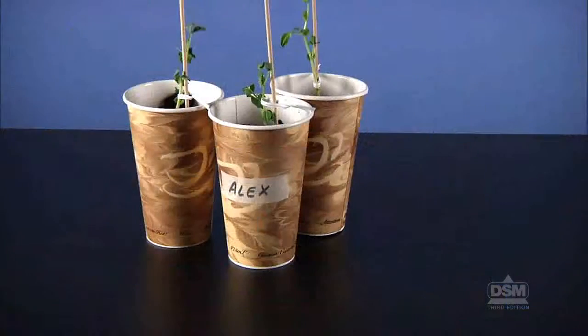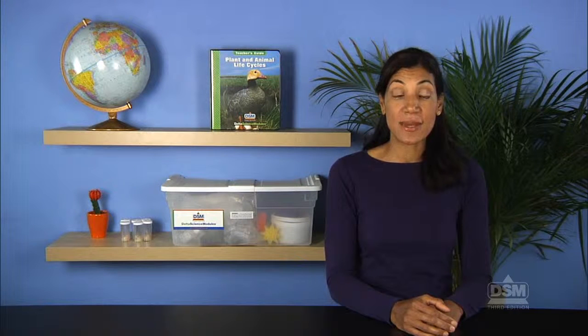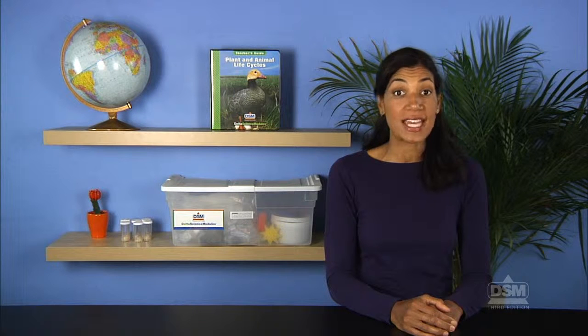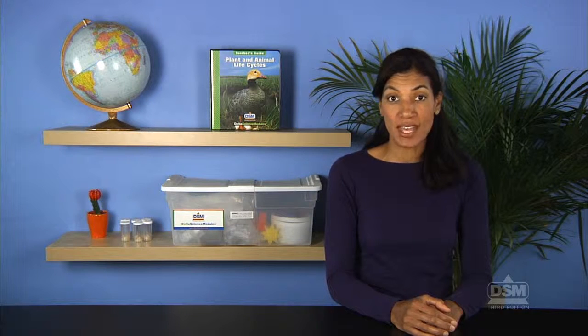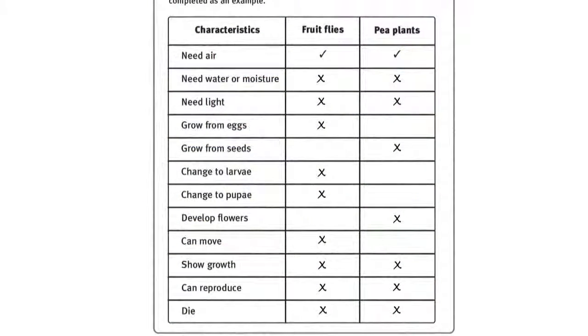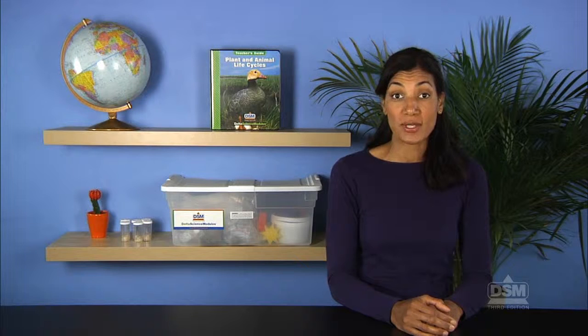Have students grab their pea plants, fruit fly vials, and file folders and inform them that they will begin this activity by listing the characteristics they have noticed in fruit flies and pea plants. Then hand out a copy of Activity Sheet 11 to each student and have students complete it on their own. After they have completed the activity sheets, discuss their responses and make a list of correct responses.